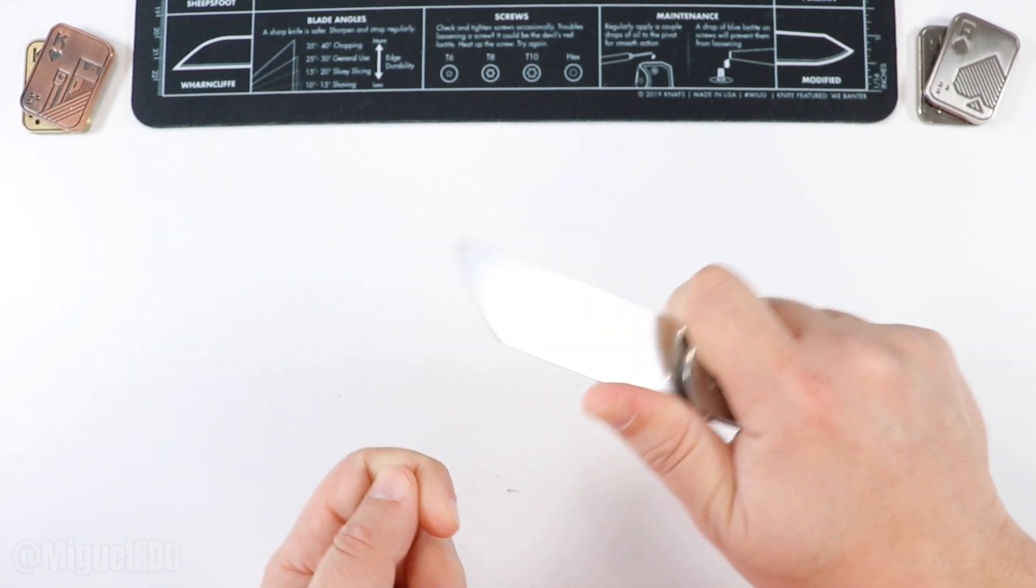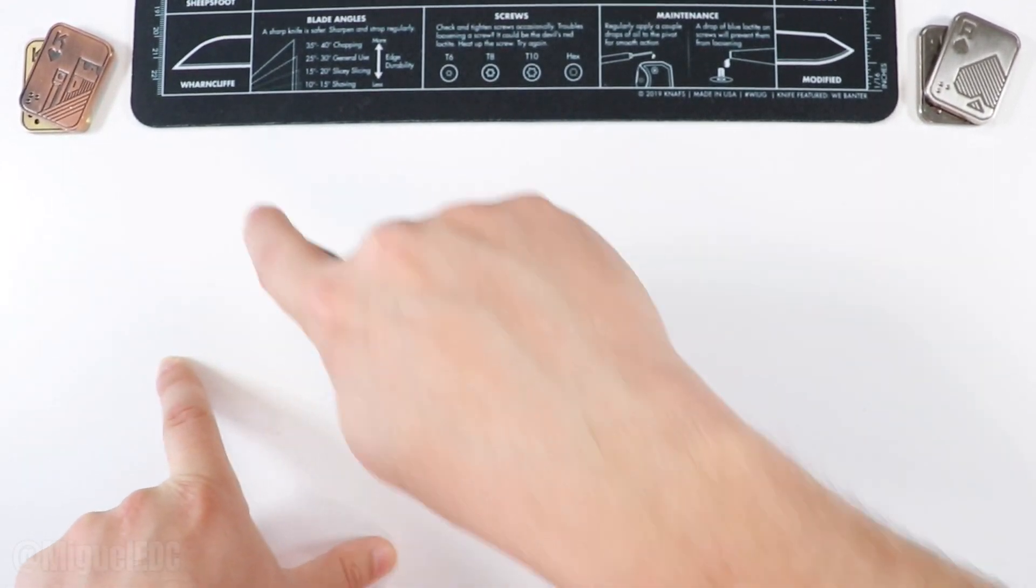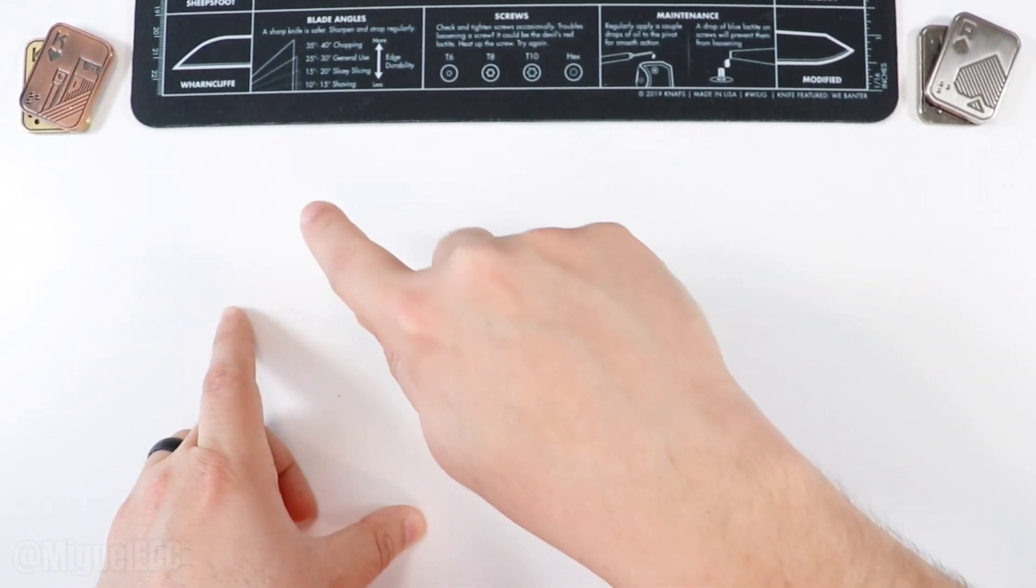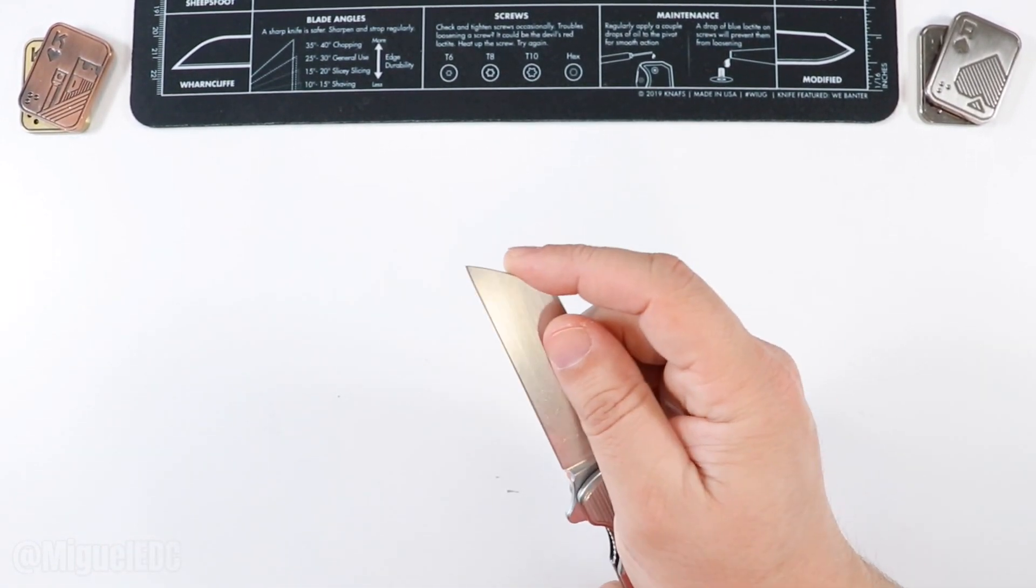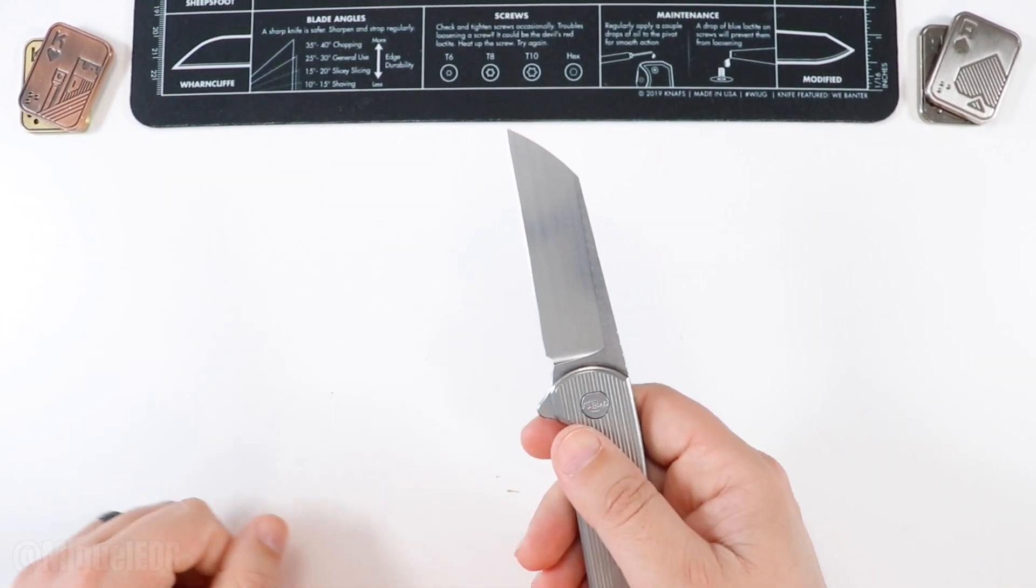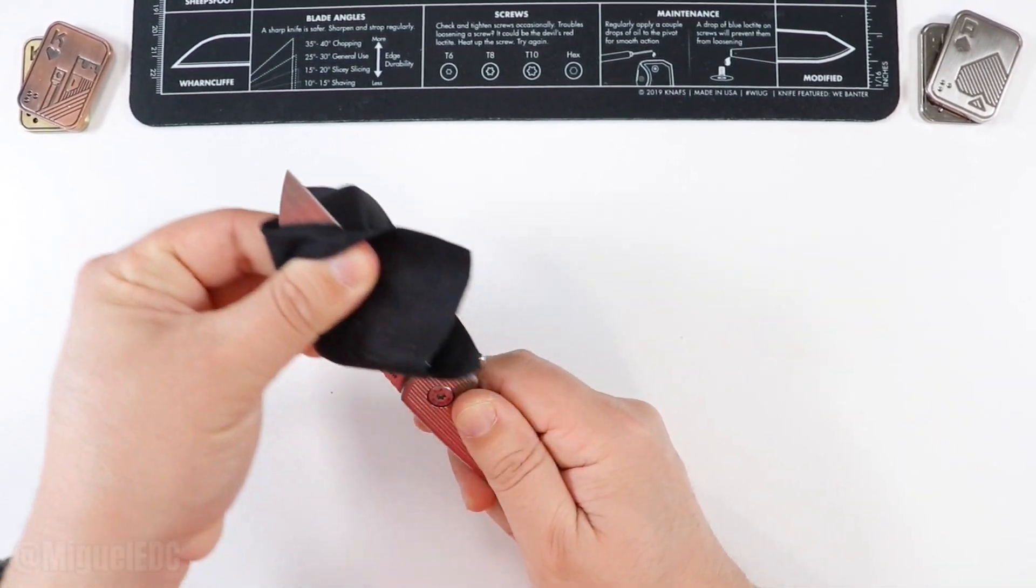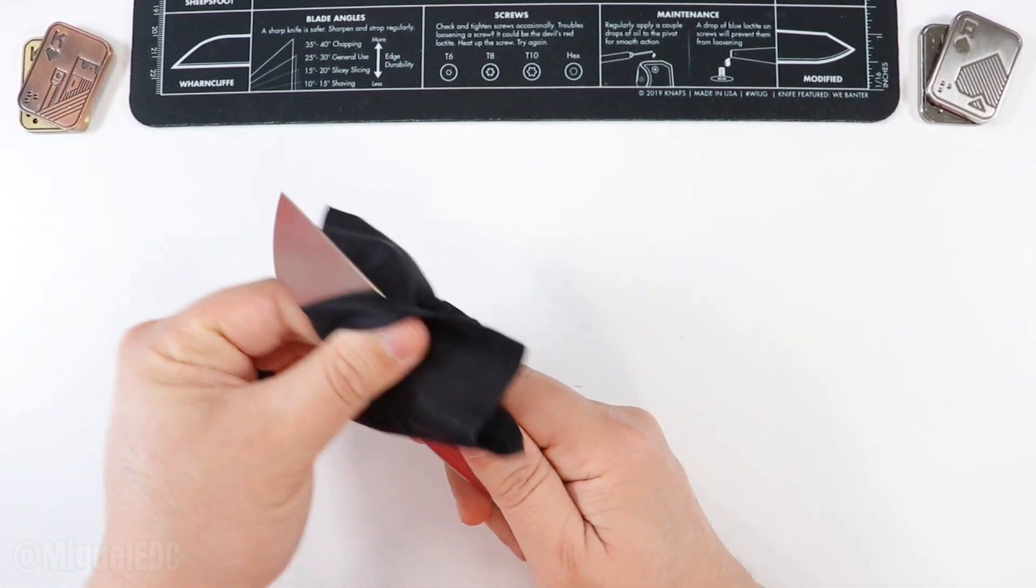Love the jimping right here on the back of the blade, which is also on the scales as well. Like how they doubled up right there. Pretty good. You can sort of forward choke also, if you wanted to, right? You have a little bit of room there, sort of like a finger choil in a way. If you wanted to, you can get some precise cuts right here. This blade is going to put in some work. That is perfect for utility cuts, draw cuts, everything like that. You can do a little pinch right here if you wanted to get more precise cutting work done. And just overall, just a really good looking blade. Really good looking knife right here.